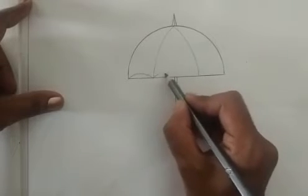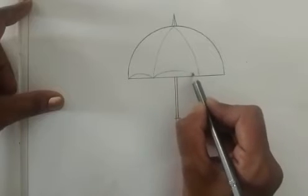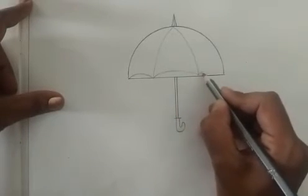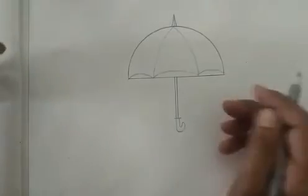We will draw a line here. We will draw a half circle like this. Now.